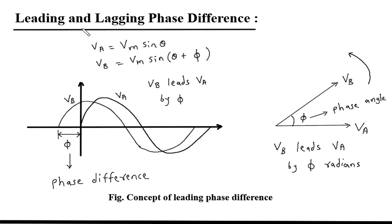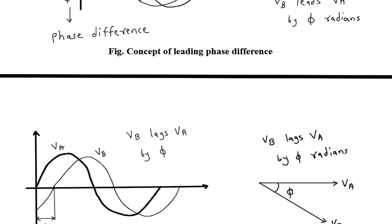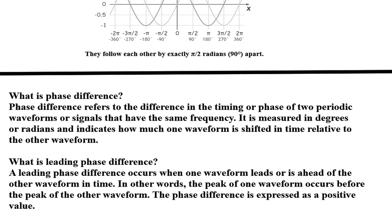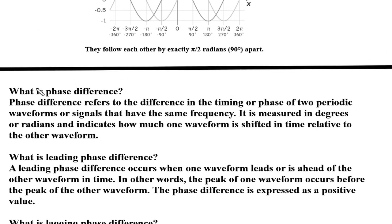Questions and answers on leading and lagging phase difference. What is phase difference? Phase difference refers to the difference in the timing or phase of two periodic waveforms or signals that have the same frequency.